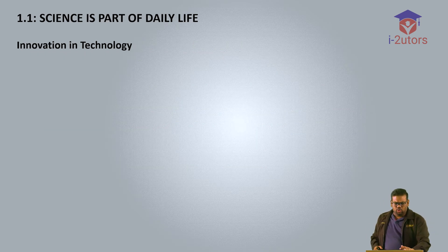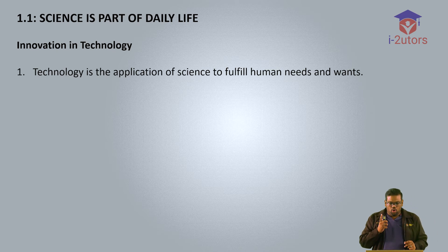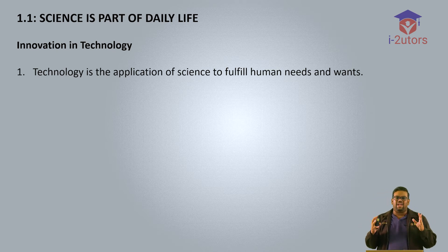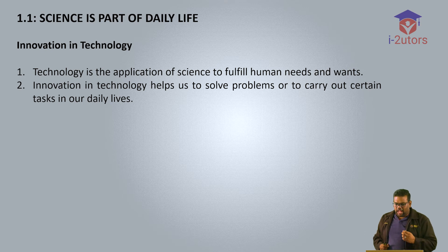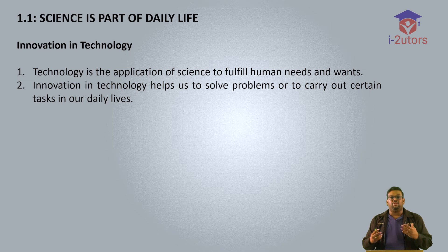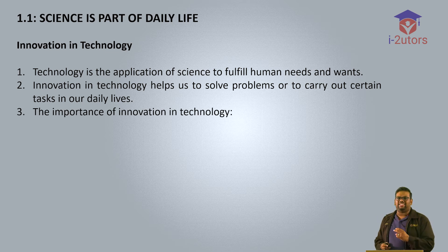Moving on to something new in this year's syllabus — this latest science syllabus has just been implemented in 2019. Innovation in technology: technology is an application — it could be an app or a machine — but the key word here is to fulfill human's basic needs and wants. Innovation in technology helps us to solve problems or carry out certain tasks in daily life. For example, a washing machine helps you wash clothes, and a car brings you from one place to another easily and fast.